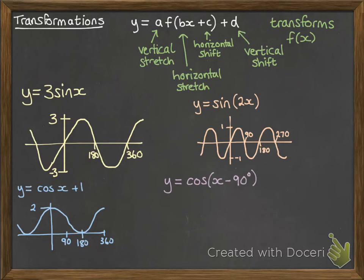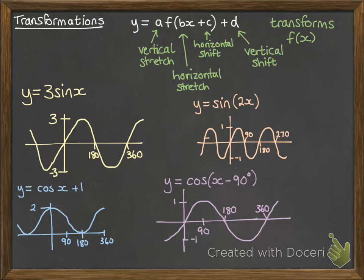y equals cos of x minus 90. That's happening inside the function, so it's a horizontal shift. The minus 90 means it's going to be our cos curve moved to the right by 90. So it will look like this. Where our cos curve would have gone through 0 and 1, that's moved to the right by 90 degrees, so the peak of our curve happens at 90 degrees, and then it goes through the x-axis at 180 and 360. Still got maximum and minimum of 1 and minus 1.